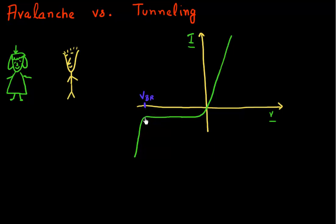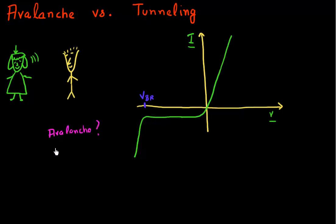She has been experiencing and measuring this reverse breakdown, and she wants to understand a little more. She comes over and she has learned that you have been taking some classes in semiconductors and know a little thing or two about PN junctions. She asks: I've been measuring this IV characteristics, and I know I'm causing a breakdown. But what I want to understand is whether this breakdown is being caused by an avalanche process or by a tunneling process.